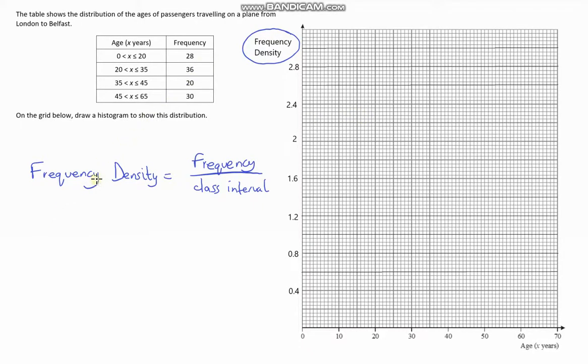To calculate frequency density, we take our frequency and divide by our class interval. So 28 divided by 20, that gives us 1.4. The second one, our frequency is 36, our class interval is 15. 36 divided by 15 is 2.4. The third row, our frequency is 20 and our class interval is 10. 20 divided by 10 gives us 2. Finally, our frequency is 30 and our class interval is 20. 30 divided by 20 gives us 1.5. We've calculated our frequency density for each category.